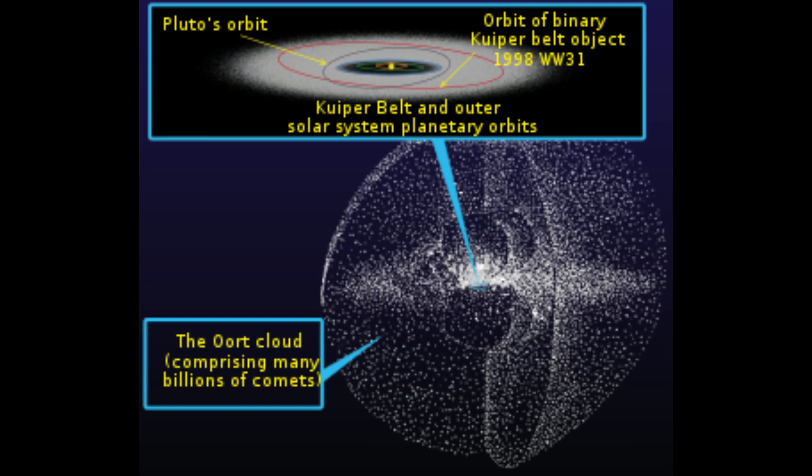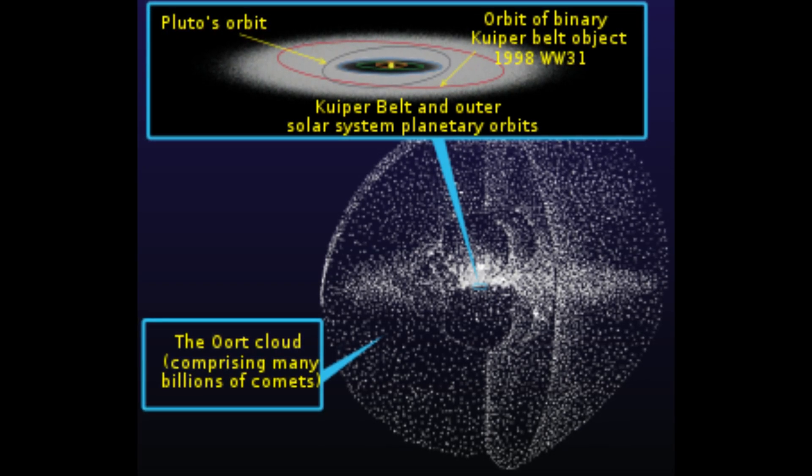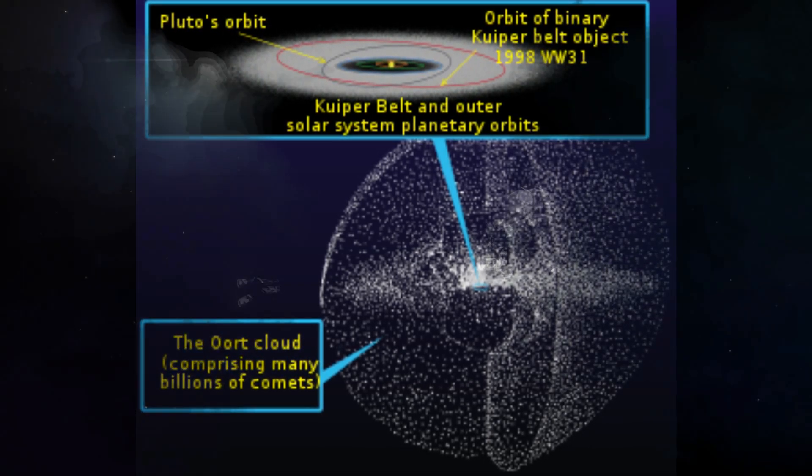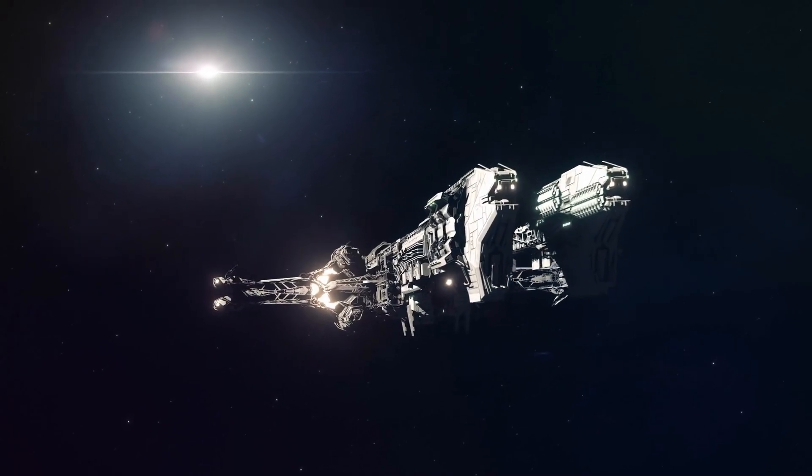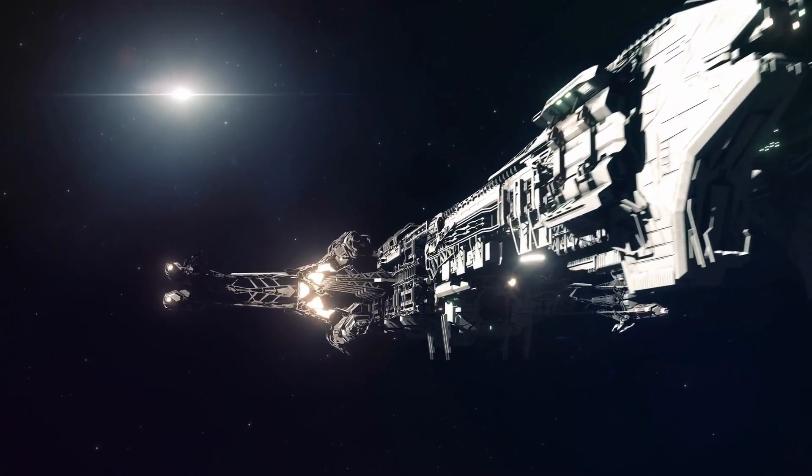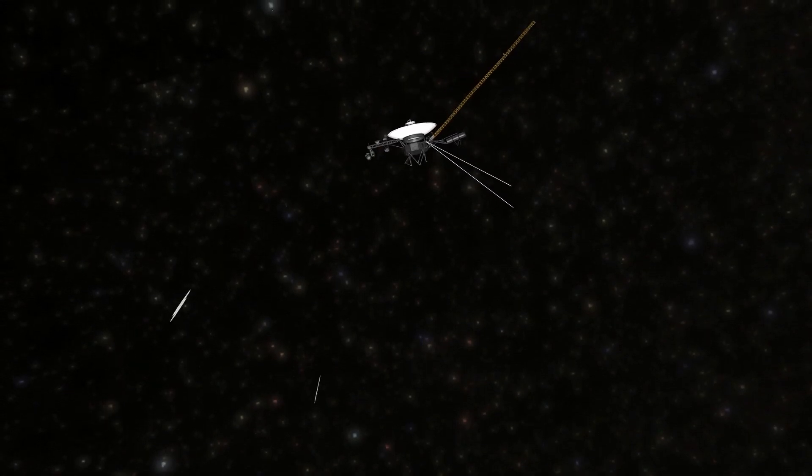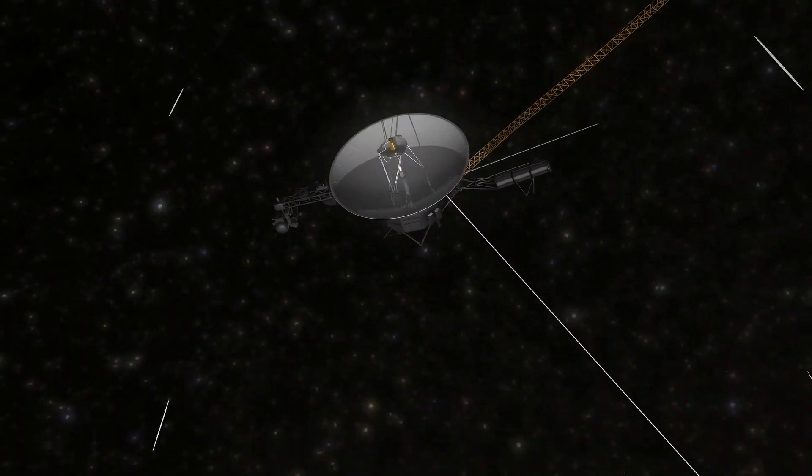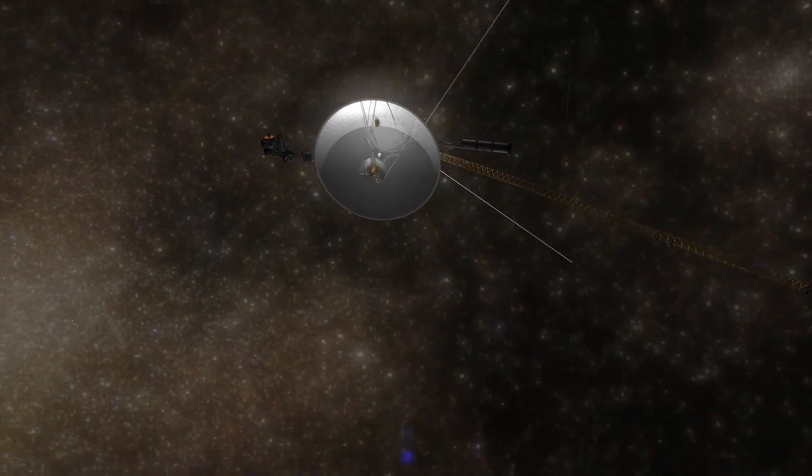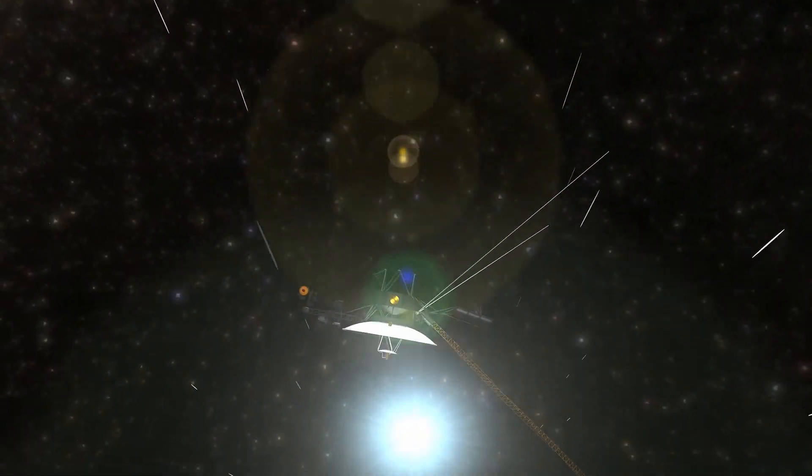The Oort Cloud is the last unexplored area in our solar system. It is thought to be a shell of icy objects that surrounds the sun at a distance that our spaceship has not yet reached. The Voyager spacecraft hasn't hit the Oort Cloud yet, but its journey into interstellar space helps us learn more about the edge of our solar system and the rest of the galaxy.